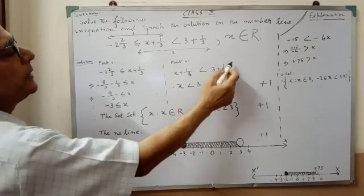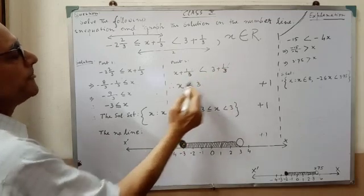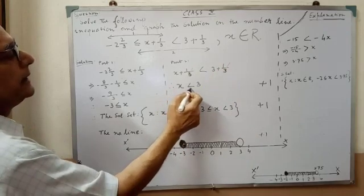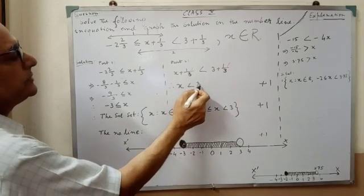Therefore, since 1/3 is the same sign on both sides, this will be cancelled. Therefore, x is less than 3.